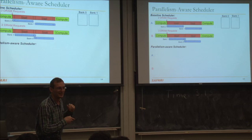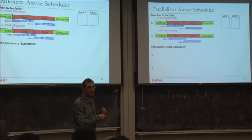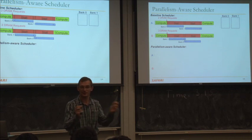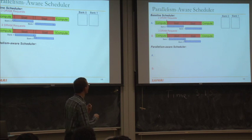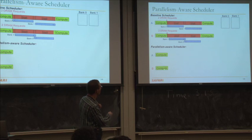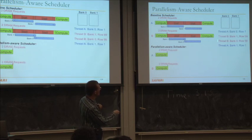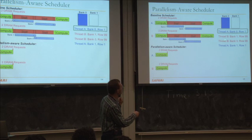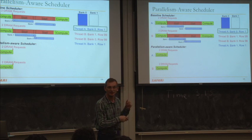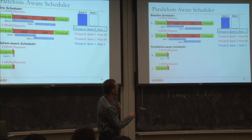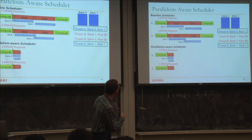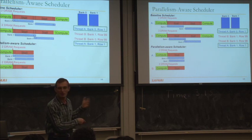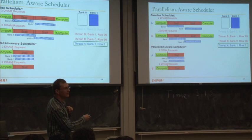A parallelism-aware scheduler can do better. After scheduling thread A's request to bank zero, instead of taking thread B's next request, the controller checks whether thread A has a request to bank one - it does, so it prioritizes that. Thread A's requests are now serviced in parallel across both banks while thread B waits. This restores thread A's memory-level parallelism. Thread B's request to bank zero gets completed next, and the controller continues with awareness of each thread's bank-level parallelism.